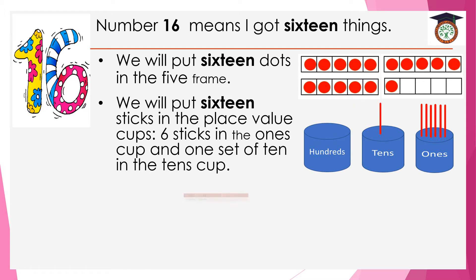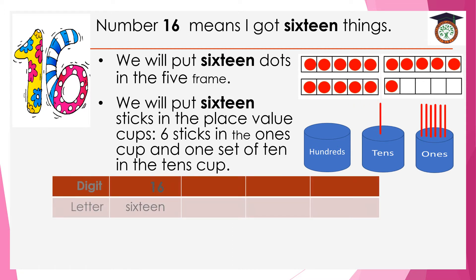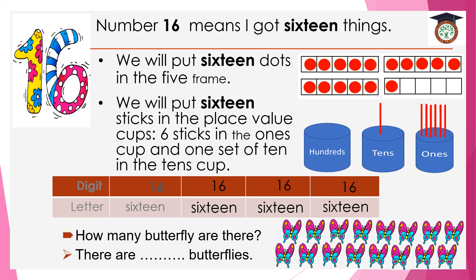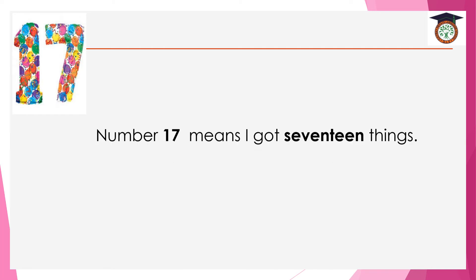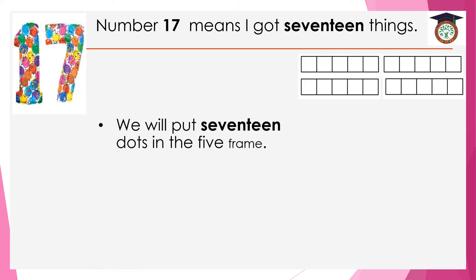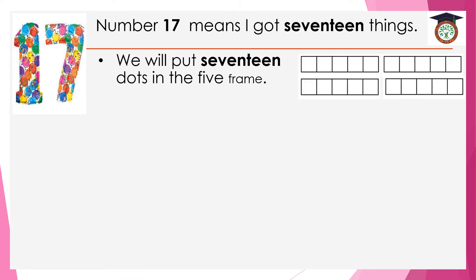Now you have to write number 16 in digits and in letters. Let's do this exercise — how many butterflies are there? Let's count. There are 16 butterflies. Now, number 17: number 17 means I got 17 things. We will put 17 dots in this 5-frame.